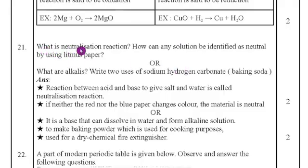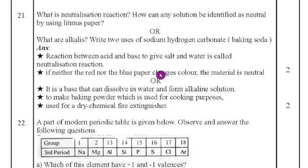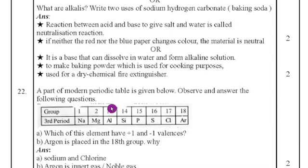Twenty-first question options: what is a neutralization reaction and how can a solution be identified as neutral using litmus paper? Or: what are alkalines, and write two uses of sodium hydrogen carbonate (baking soda)? Neutralization reaction is the reaction between an acid and a base that produces salt and water. To identify a neutral solution: if neither the red nor the blue litmus paper changes color when dipped into the solution, then the substance is neutral. Alkalines are bases that dissolve in water to form alkaline solutions.